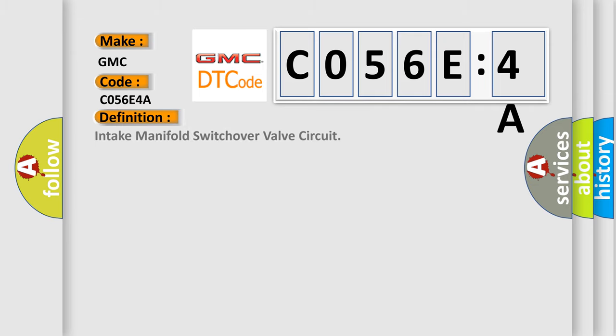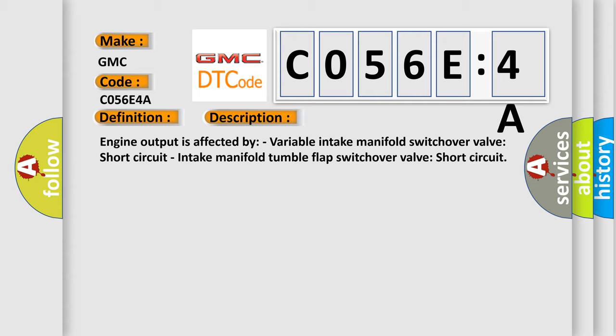The basic definition is intake manifold switchover valve circuit. And now this is a short description of this DTC code: engine output is affected by variable intake manifold switchover valve short circuit, intake manifold tumble flap switchover valve short circuit.